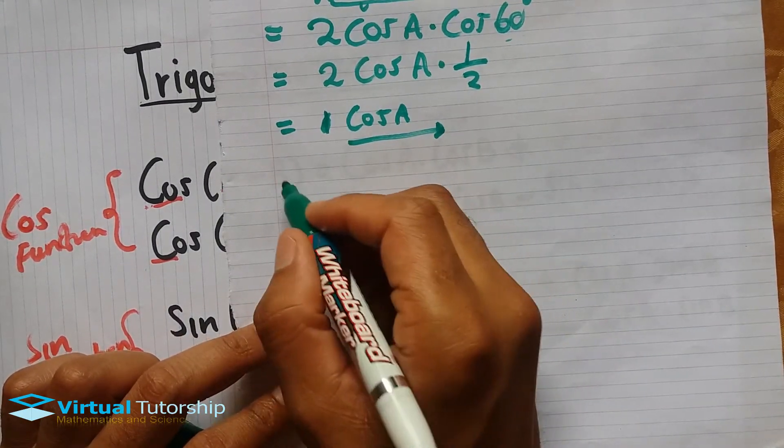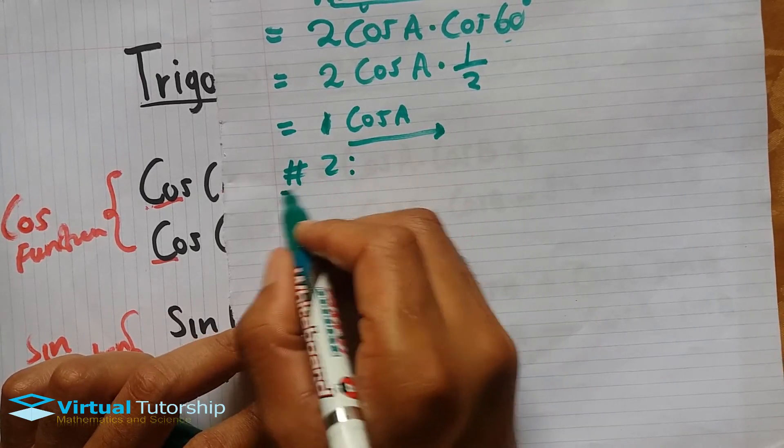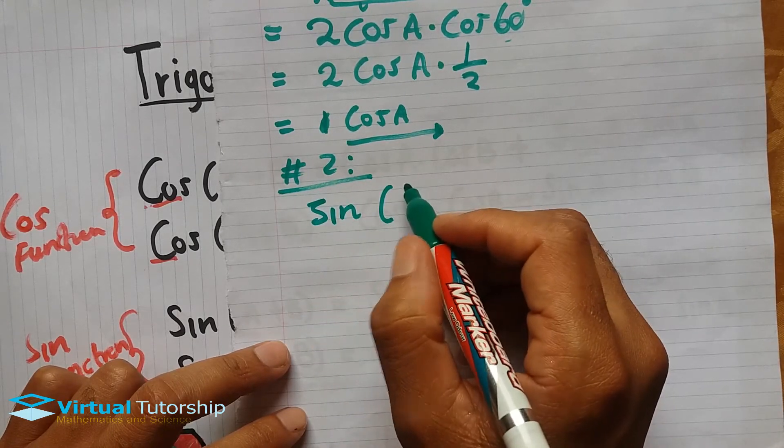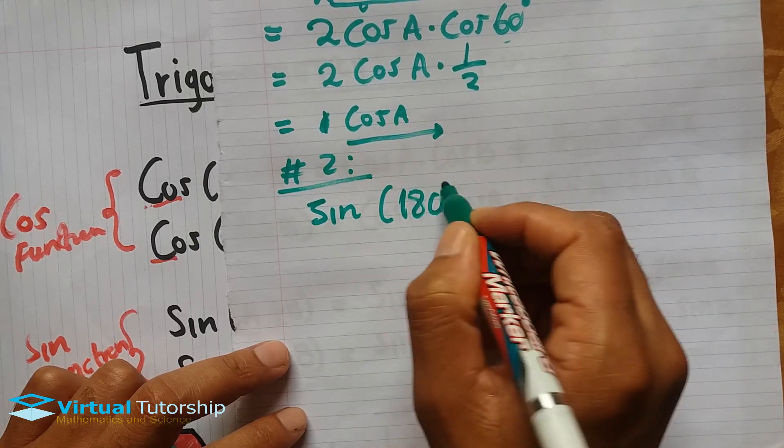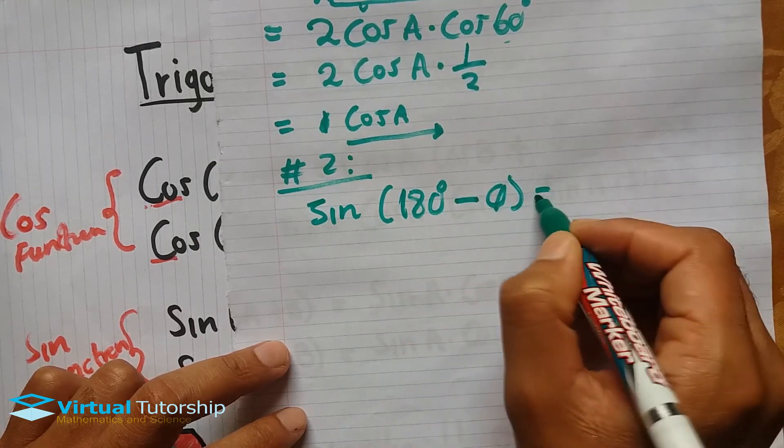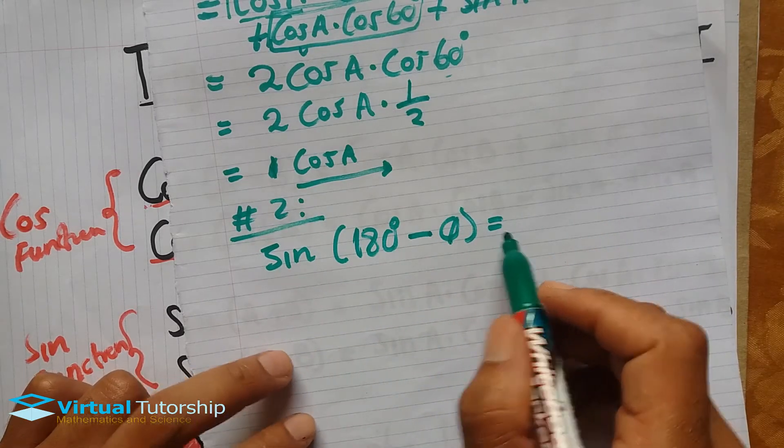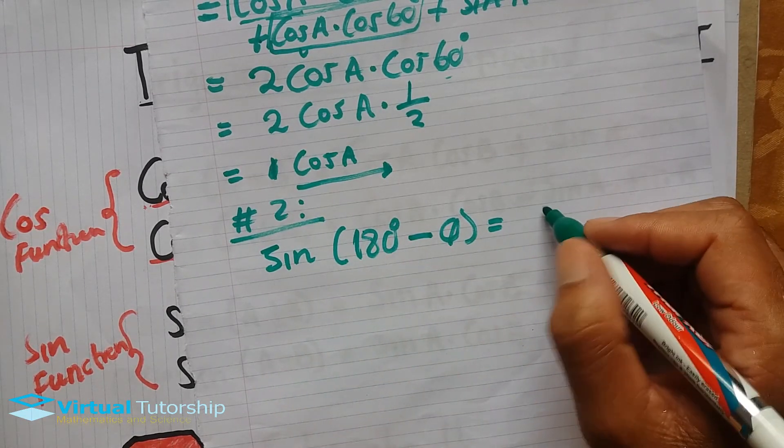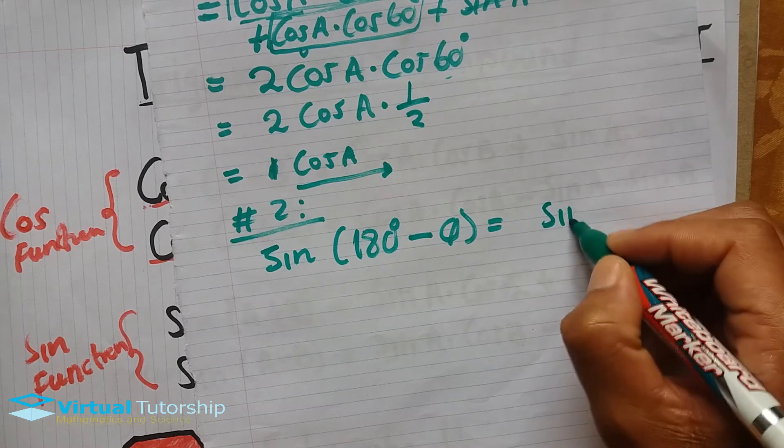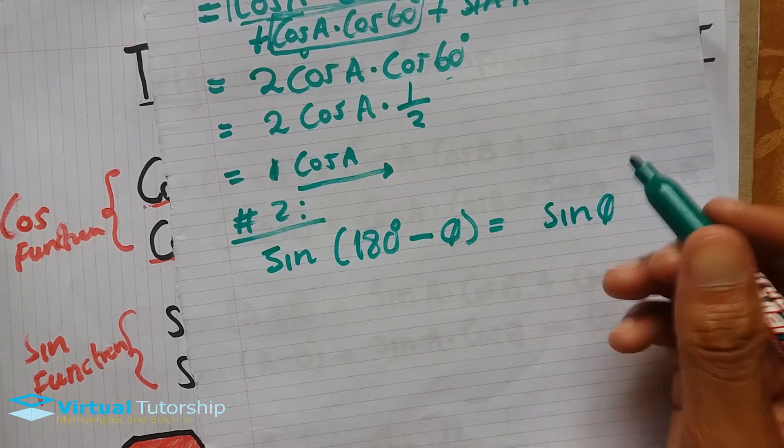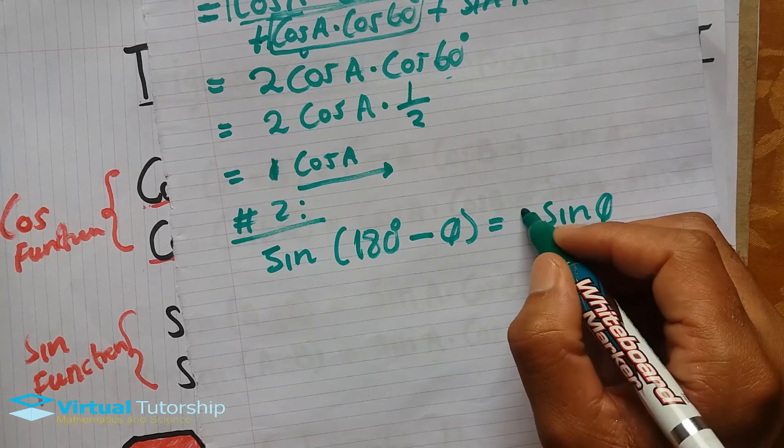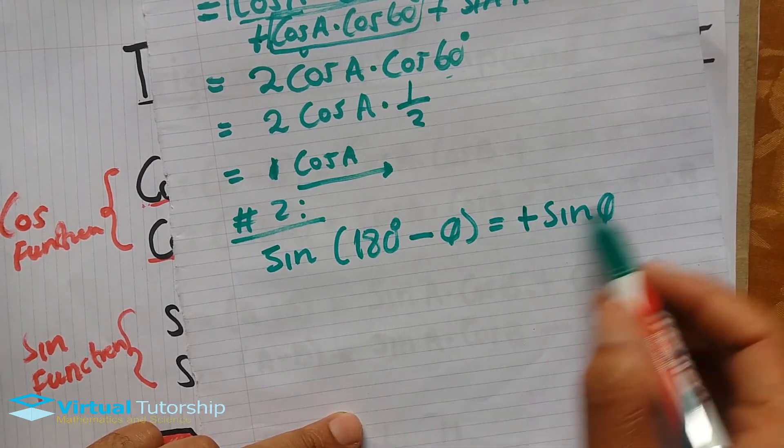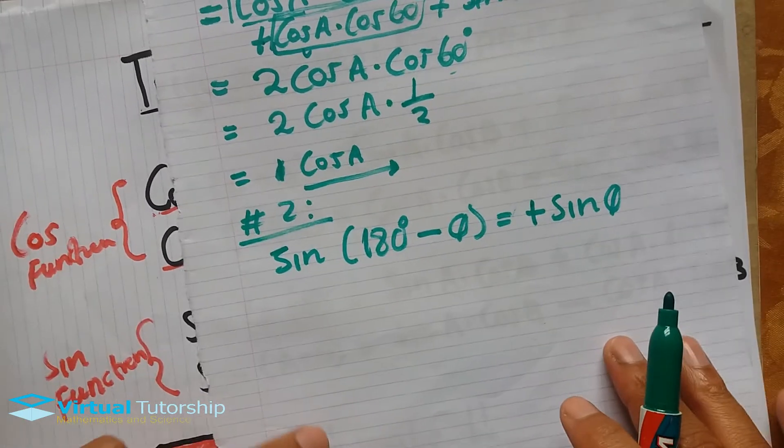Example two: Let's say we have a reduction formula sin(180° - θ). This reduction formula equals sin(θ). 180 is in the second quadrant, so the reduction formula is positive sin(θ).